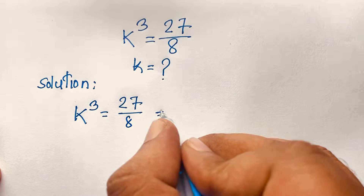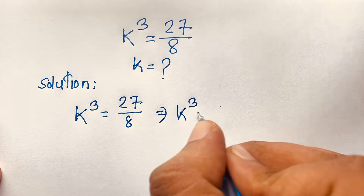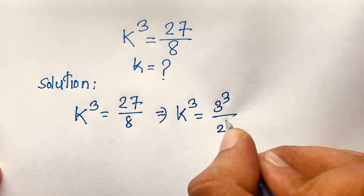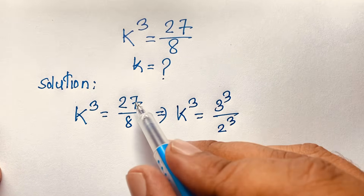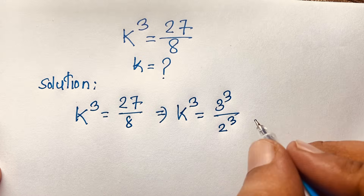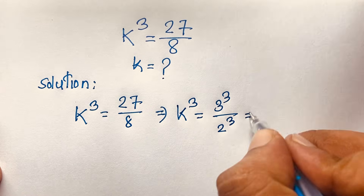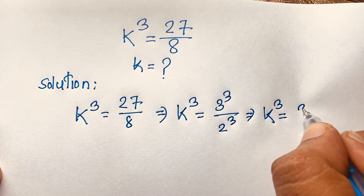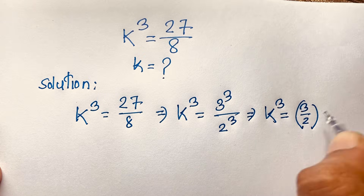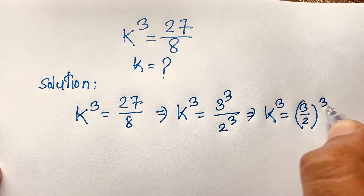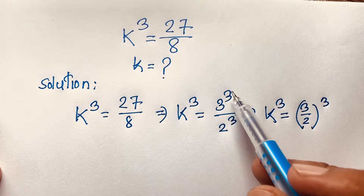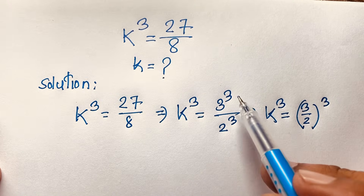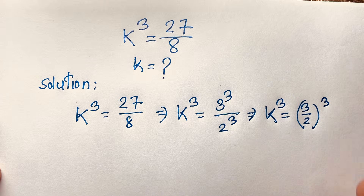You can see this expression: k³ = 3 to the power 3 over 2 to the power 3, since 3³ = 27 and 2³ = 8. Now using the exponent law — a to the power n over b to the power n equals (a/b) to the power n — we get k³ = (3/2) to the power 3.